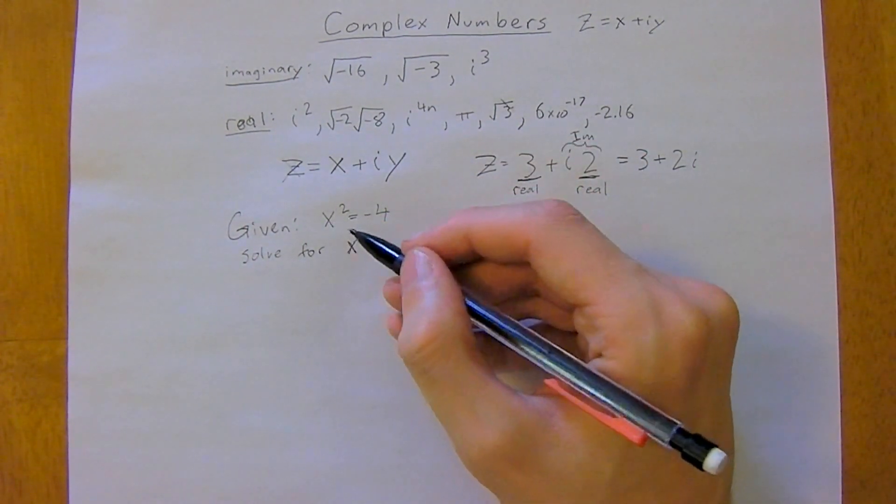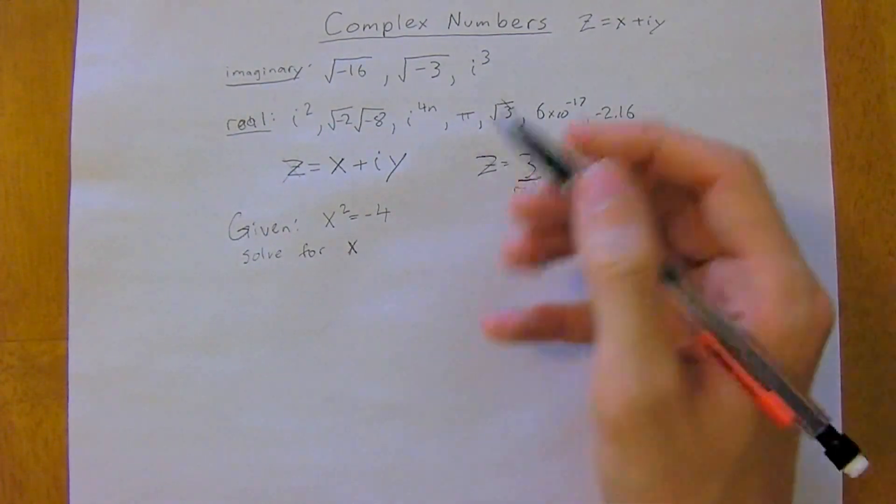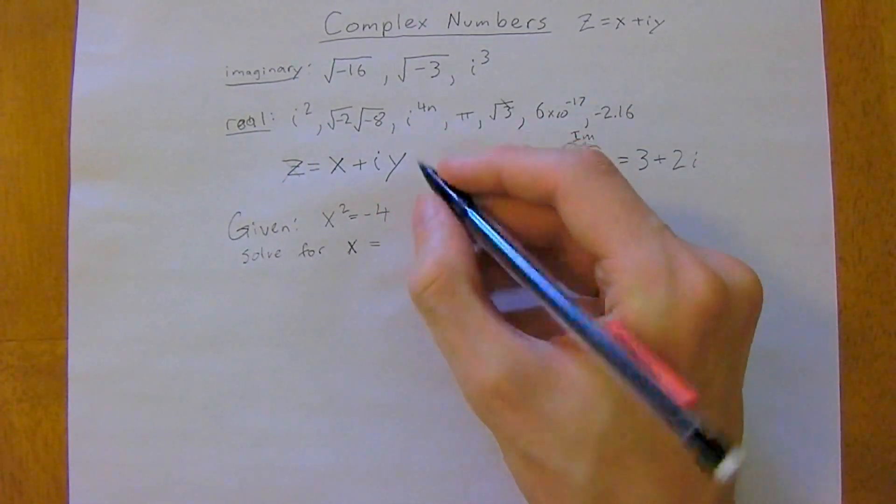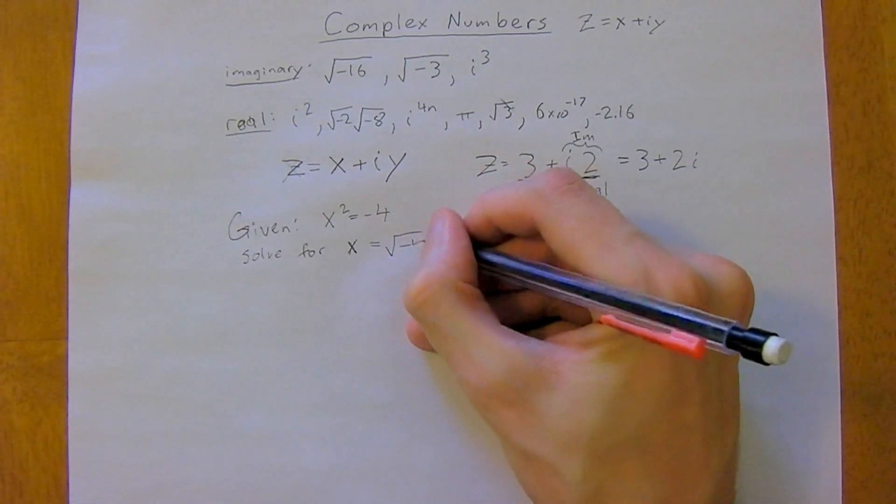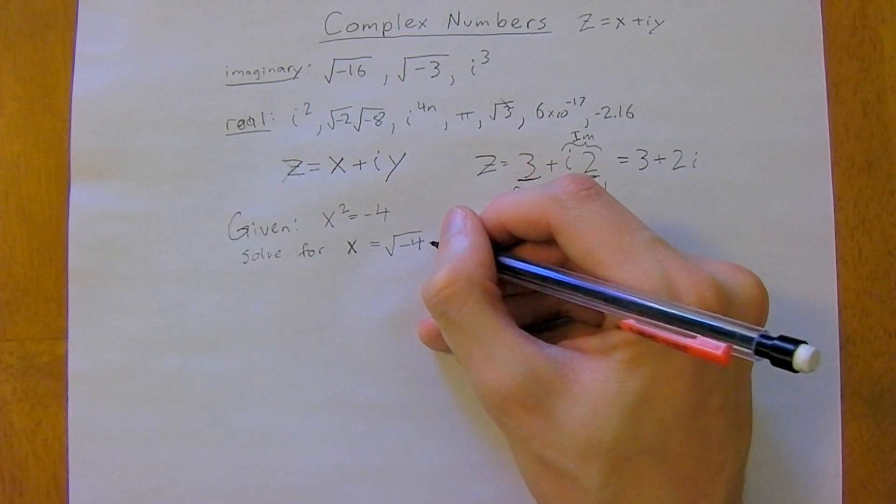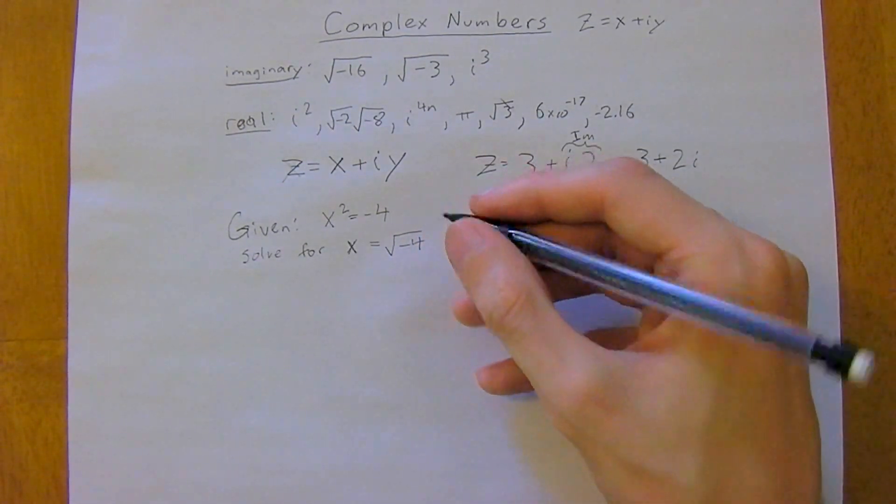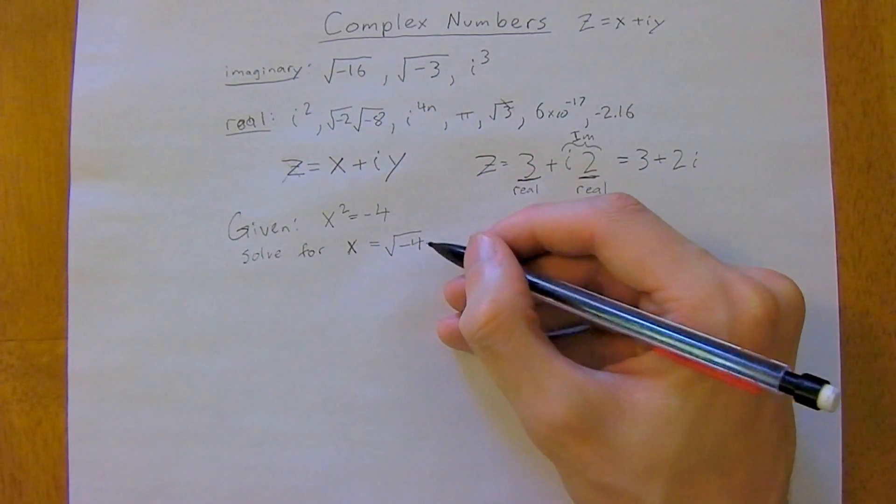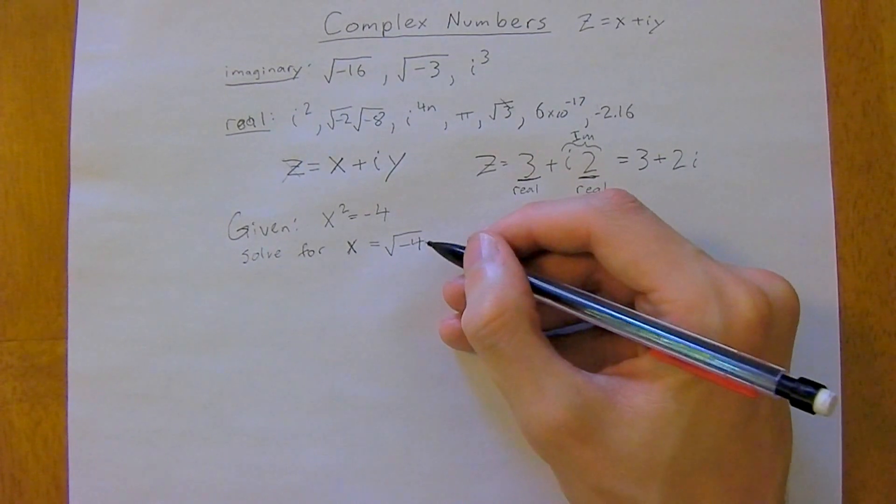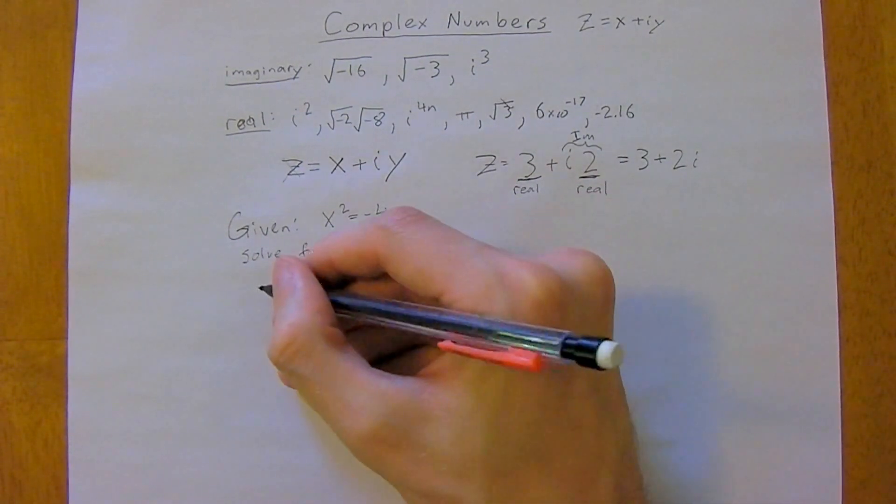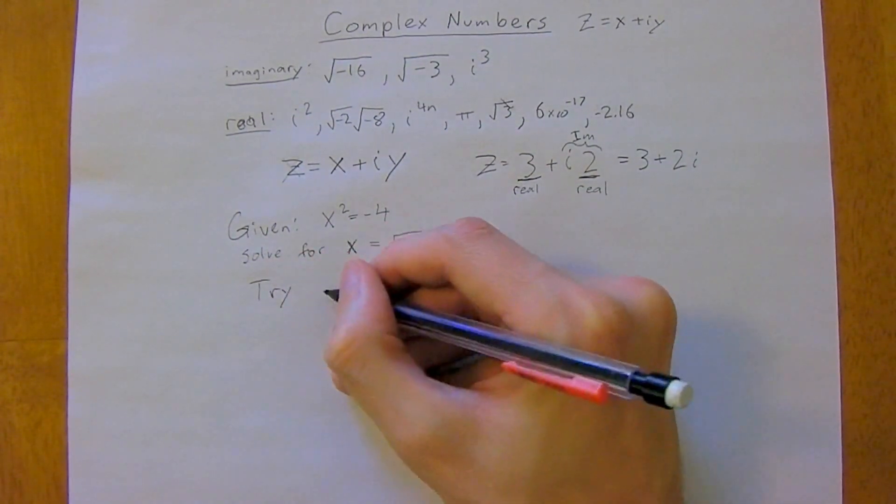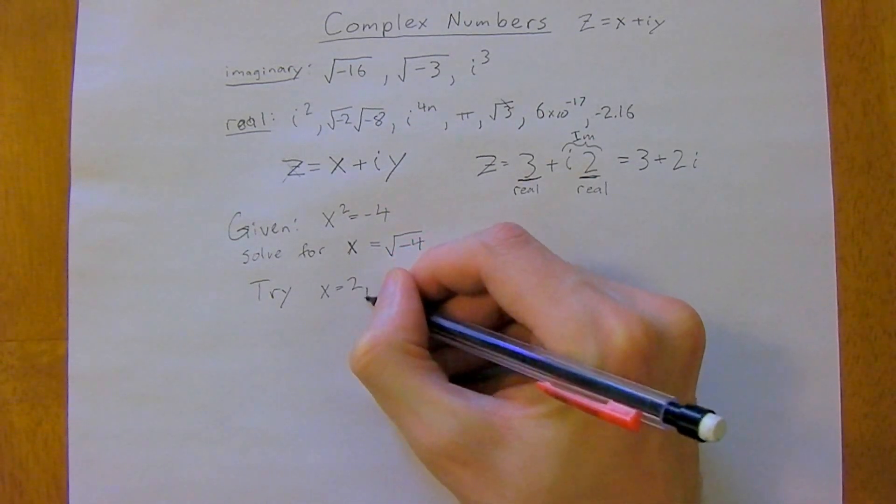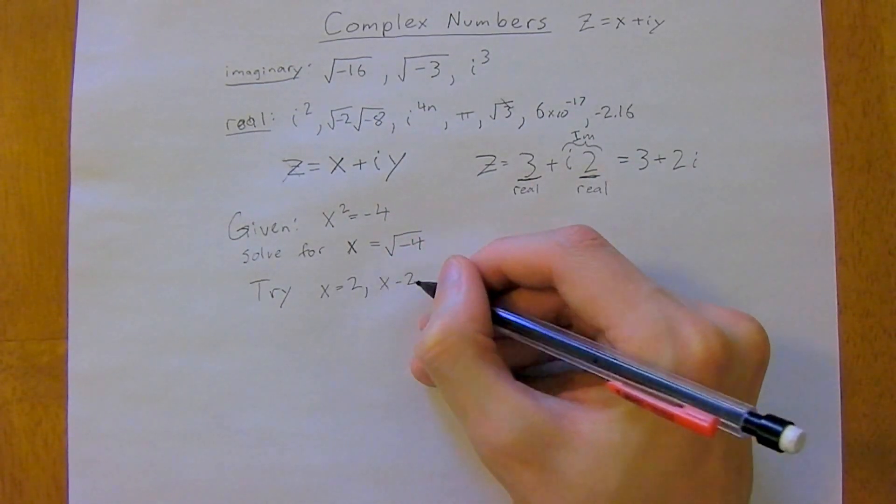So you just take the square root of both sides of this equation and you're going to get x is equal to the square root of negative 4. And well, you cannot have a negative number in a square root—that just doesn't make sense.